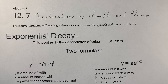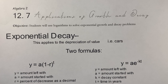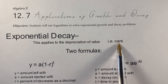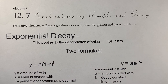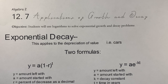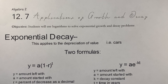Decay happens when a value depreciates over time. Depreciation is like the value of a car — when you buy a car it instantly starts to lose value, that is depreciation. So anytime a value goes down we're talking about depreciation or decay.